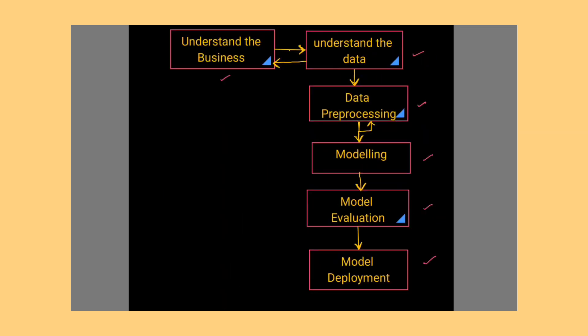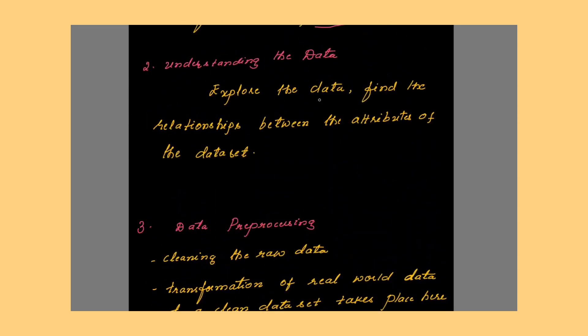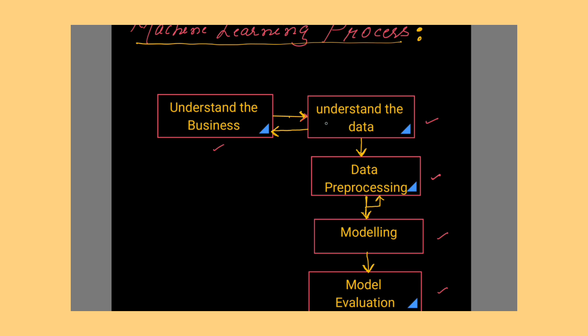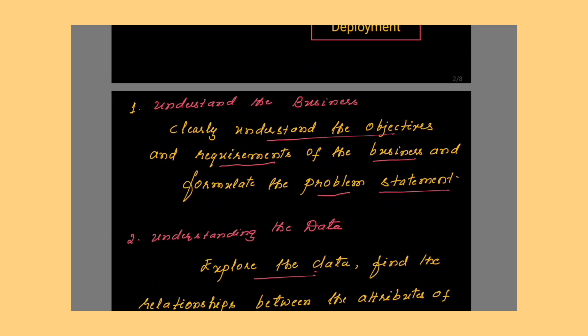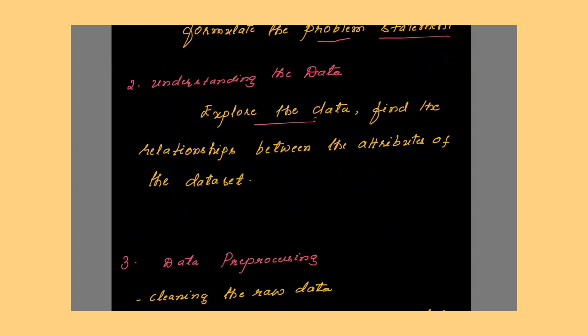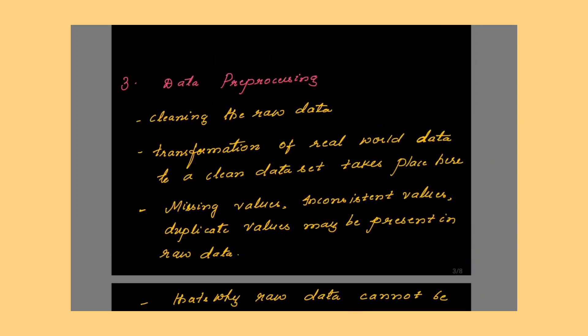Next step is understanding the data. Understanding the data is simply exploring the data, finding the relationships between the attributes of the dataset. After you explore the data in this understand the data stage, if you are not able to get the complete requirement, you can go back to the previous stage and get to know the complete requirements and proceed for the next step. That is about the second stage, understanding the data. Then comes the data preprocessing.